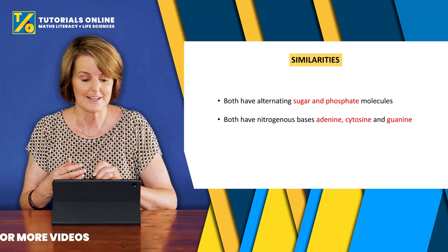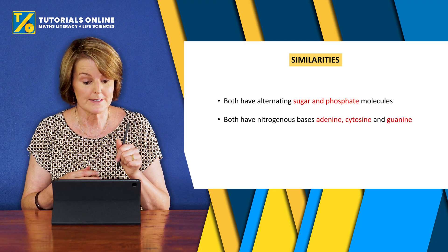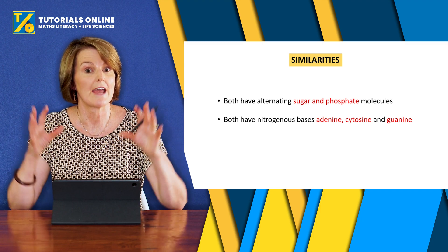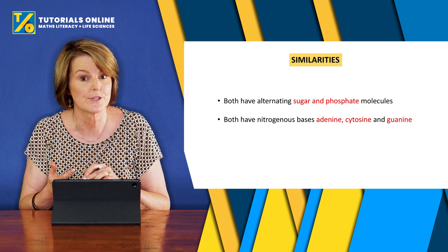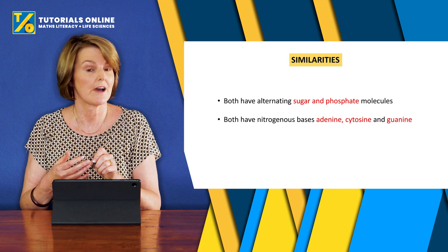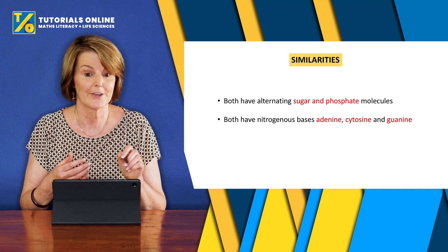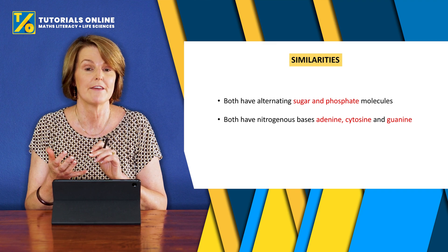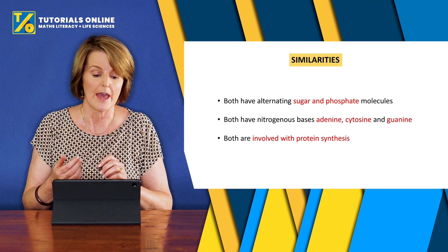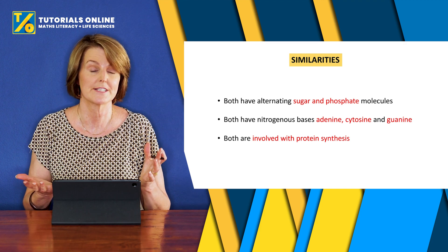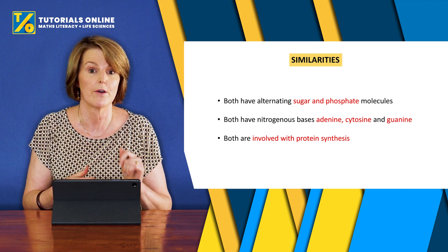The next thing is that they both have nitrogenous bases, but the nitrogen bases they have in common are adenine, guanine, and cytosine. You'll notice thymine isn't here and uracil isn't here — that comes later. So the similarity is that they both have adenine, guanine, and cytosine, and both are involved in protein synthesis. Those are the three similarities you need to know.